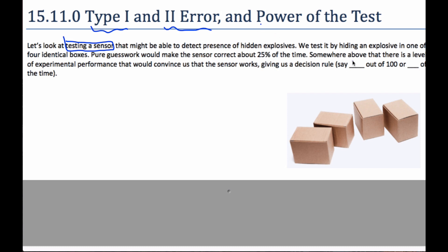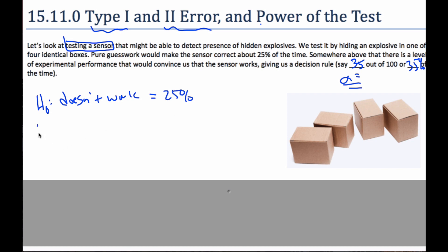Let's make up a rule: 35 times out of 100, or 35% of the time. This 35 is comparable to our alpha value, our level of significance. Our null hypothesis would be that the machine does not work — the proportion equals 25%. The alternative hypothesis is that it does work, so the proportion is more than 25%. We say if it's correct 35% of the time, then the device works.